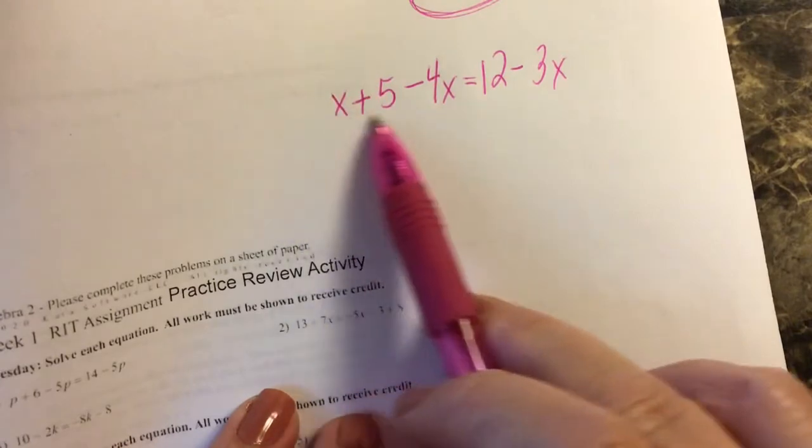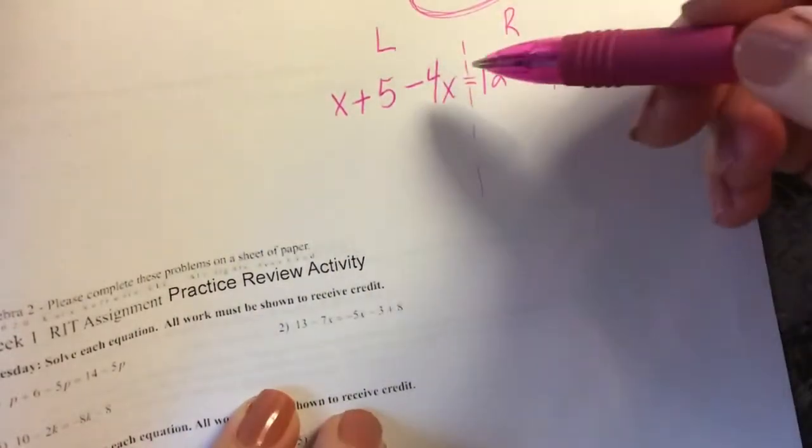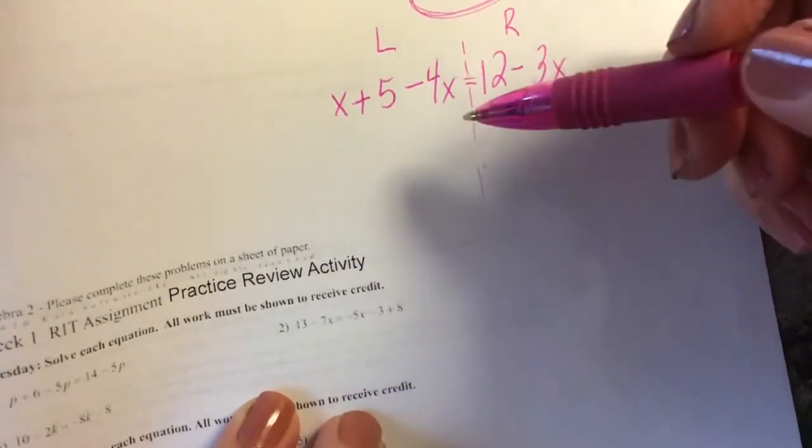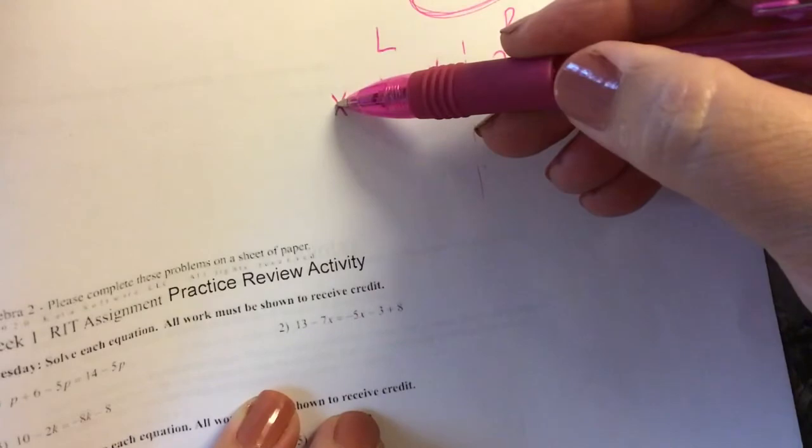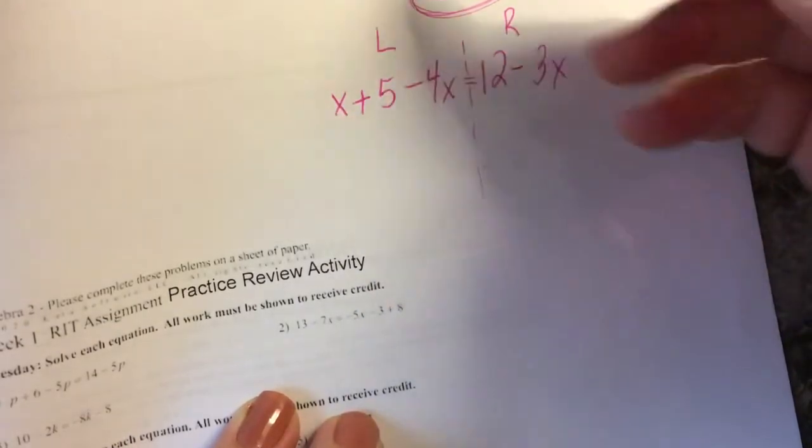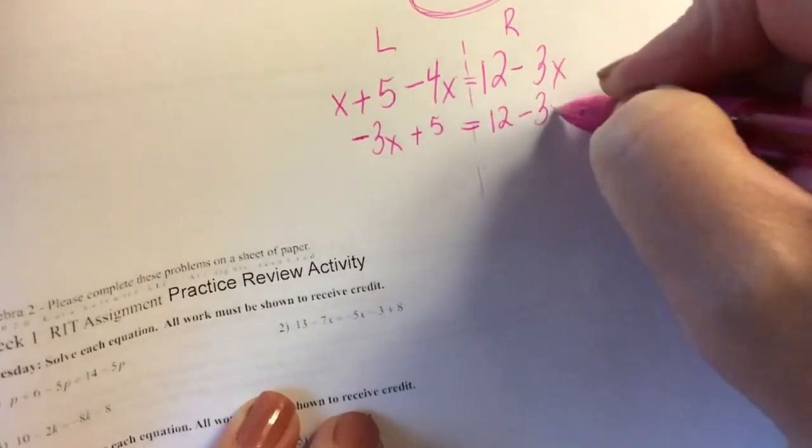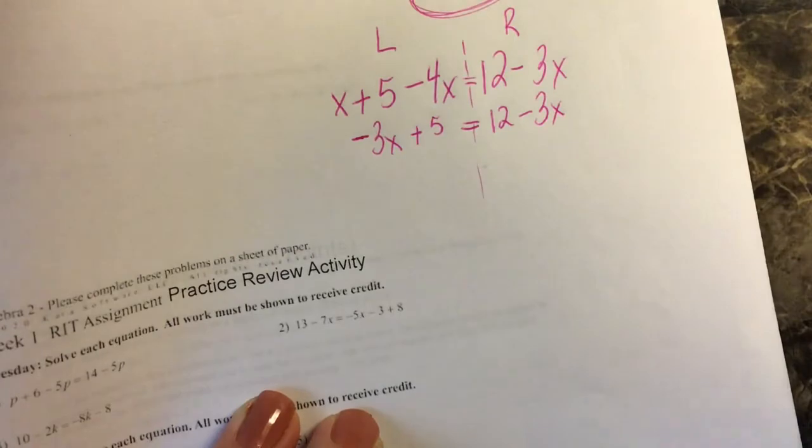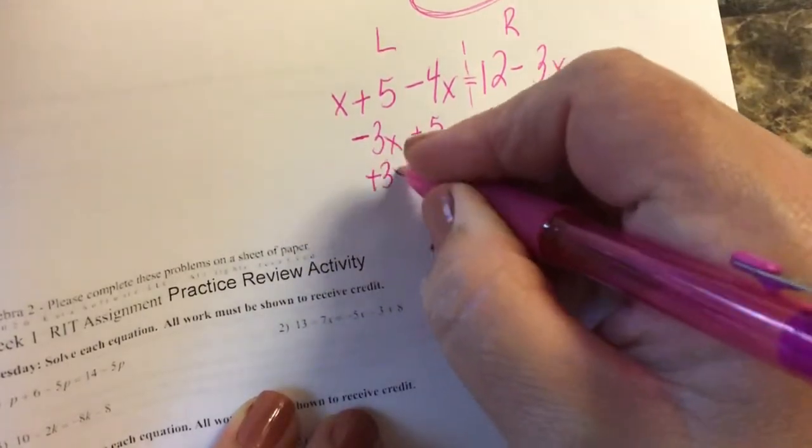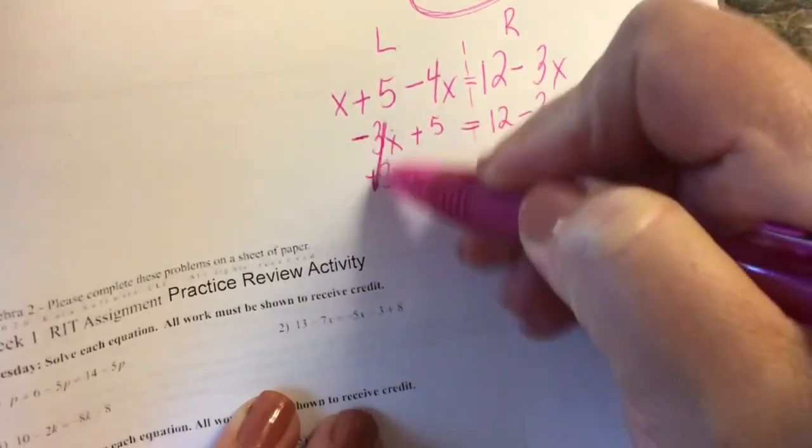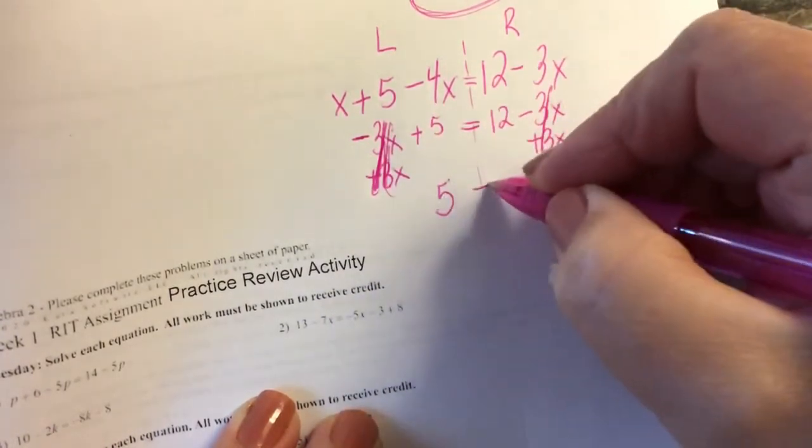If you have like terms on the left hand side of your equal sign, a lot of teachers will say on the left or on the right, and when they say left or right they're talking about what side of the equal sign. As we look at this I do have like terms on the left side of this equal sign. I have positive 1x and negative 4x. 1x minus 4x is negative 3x plus 5. The next thing I'm going to do is move my smallest x to the other side. Negative 3x plus 3x is 0 and then I'm going to end up with nothing and then 5 equals 12.